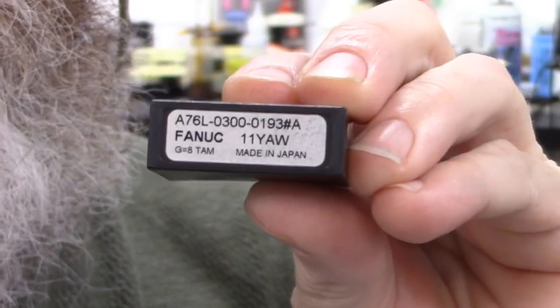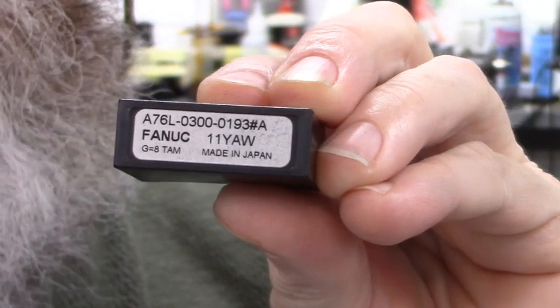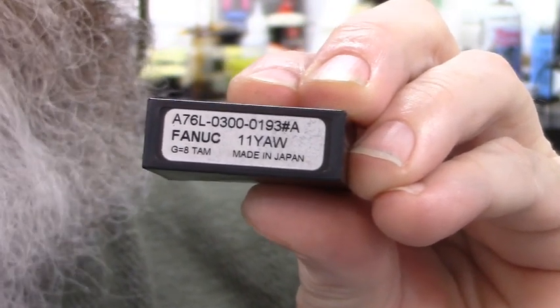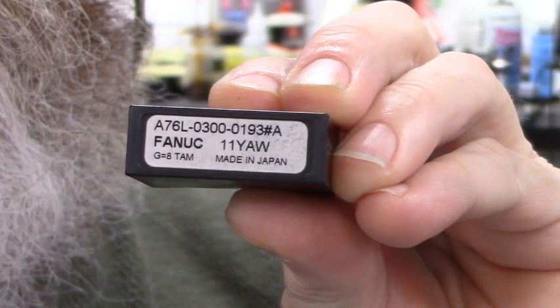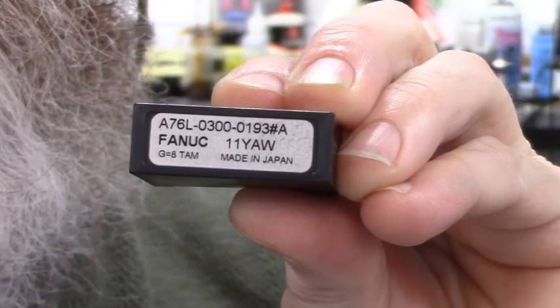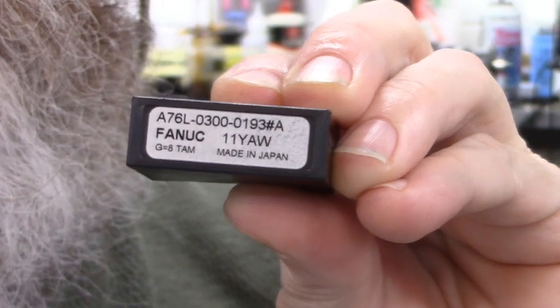Good morning all. Hope you all is having a good day. Here's an isolation amplifier module from a FANUC servo amplifier and it is part number A76L-0300-0193 pound sign A.